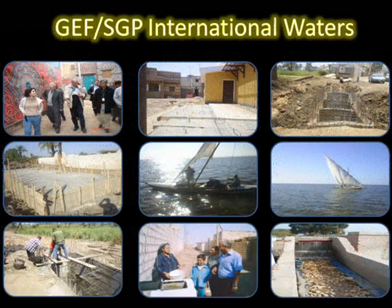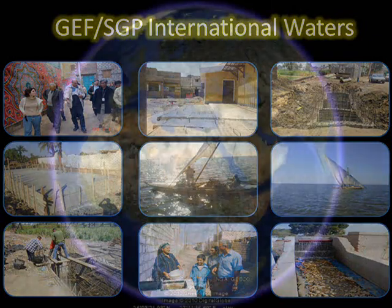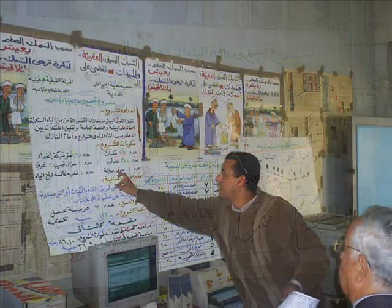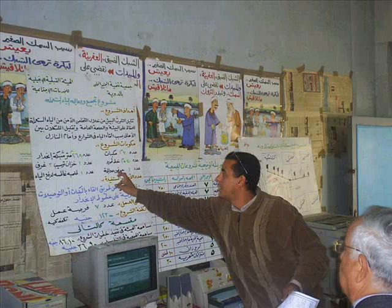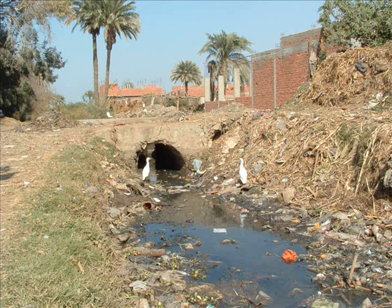The Small Grants Program, as a corporate program of GEF implemented by UNDP, has funded projects involving communities close to endangered water bodies or with transboundary threats to their ecosystems. These international water projects generally involve the demonstration of small-scale techniques that have the power to reduce water pollution in specific transboundary water bodies.